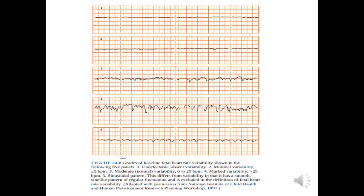As shown in the diagram: Category 1 — undetected or absent variability. Category 2 — minimal variability, less than 5 beats per minute. Category 3 — moderate or normal variability. Category 4 — marked variability, more than 25 beats per minute. Category 5 — sinusoidal pattern.